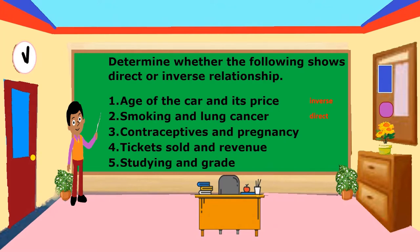3. Contraceptives and pregnancy — it's inverse. So, the more you use contraceptives, the lesser you will be pregnant. 4. Tickets sold and revenue — direct. The greater the number of tickets sold, the greater the revenue. 5. Studying and grade — it's also direct. The more you study, the greater the chance of having a higher grade.